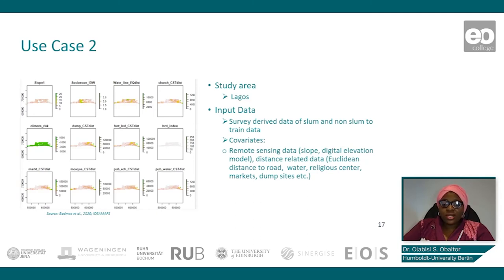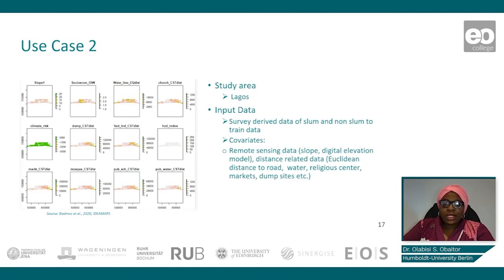The remote sensing data includes slope and digital elevation model. We also have distance-related generated data sets such as distance to road, water, religious centers, markets, and dump sites. All our raster data sets are in 30-meter resolution. Now let us go to QGIS where we prepare our data for further analysis.